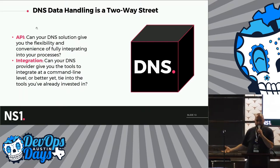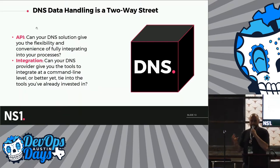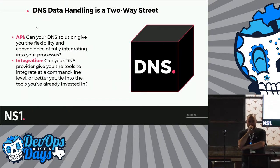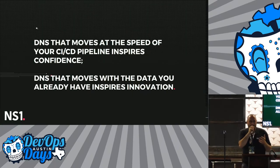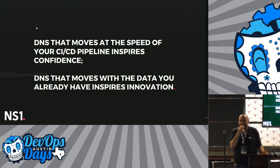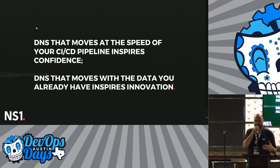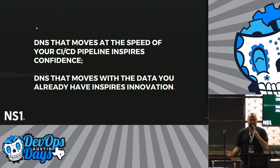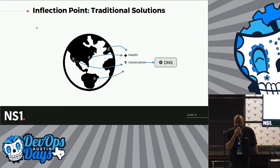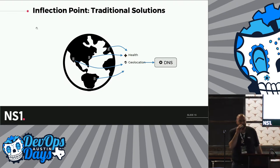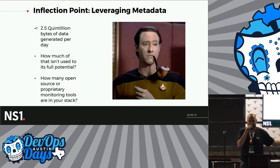All the data that you already have can also be piped into the DNS. We have an API and integrations here at NS1, and a lot of other DNS providers do too. You want to be able to move at the speed of confidence, and have a DNS that moves with the data you already have to help inspire innovation and find efficiencies and ways to do things better. In a traditional DNS setup, you might use some geo load balancing or health metrics — this is all well and good, but it's a very limited context. You want to be able to have a broader context from the overall big data that you have access to.